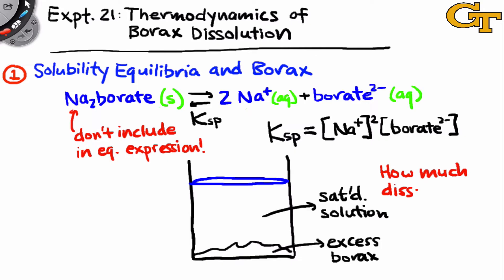The key question we need to answer about this saturated solution is how much borate anion actually dissolved. And note that since the concentrations of borate and sodium cation are related by stoichiometry, once we know the concentration of borate in this saturated solution, we can calculate the equilibrium concentration of dissolved sodium fairly easily just by doubling the concentration of borate.